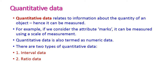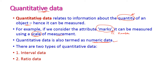The second main type of data is quantitative data, which provides information about the quantity of a particular object. Since it involves quantity, the values are numeric data. For example, the mark of a particular student is naturally a number, and we can measure it using a scale. Quantitative data is again divided into two types: interval data and ratio data.